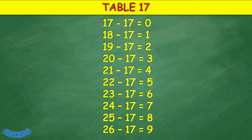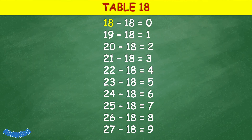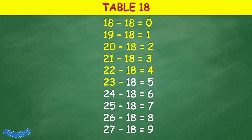Table 18: 18 minus 18 equals 0, 19 minus 18 equals 1, 20 minus 18 equals 2, 21 minus 18 equals 3, 22 minus 18 equals 4, 23 minus 18 equals 5, 24 minus 18 equals 6.